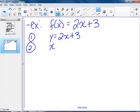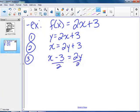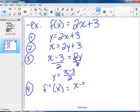Now I'm going to swap my x's and y's. x equals 2y plus 3. Now I've got to solve for y, get y alone. So I'm going to subtract 3 on both sides, take 3 away from both sides. Divide by 2, and I'm going to switch the sides. So I have y equals x minus 3 divided by 2. And then I'm going to use my inverse notation, f inverse equals x minus 3 over 2.